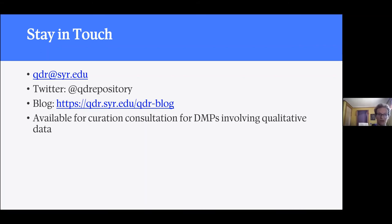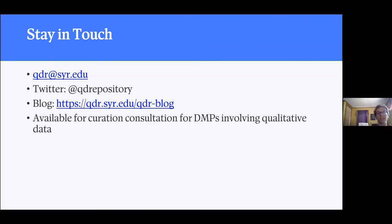Paul asks: what are the common pitfalls scholars suffer in constructing a DMP? Lack of specificity is a big one — writing in generalities rather than being specific. For example: I'm conducting semi-structured interviews, I'm going to save them as Word .docx files, I'm going to record them with XY device. Be as explicit as possible. And as I mentioned, program offices will often complain about lack of specificity specifically around data sharing.